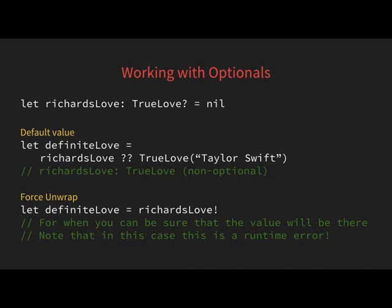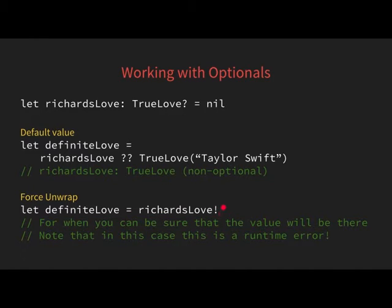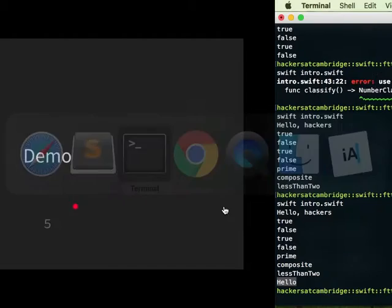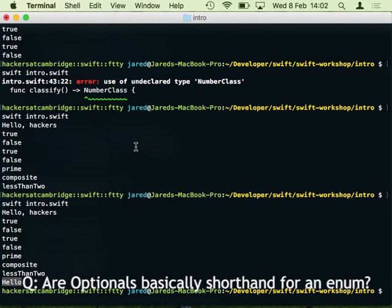There are a few ways to work with optionals. You can use optional binding ('if let'). You can also provide a default value using the nil-coalescing operator '??': 'let definiteLove = richardsLove ?? defaultValue' — if richardsLove has a value it goes to definiteLove, otherwise the default does. You can also force-unwrap with an exclamation mark when you know without a doubt that the optional contains a value.